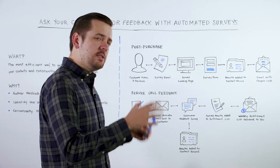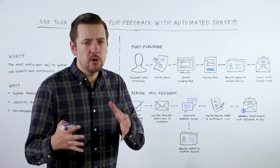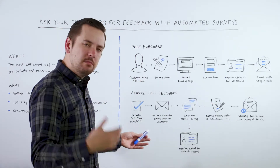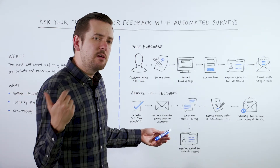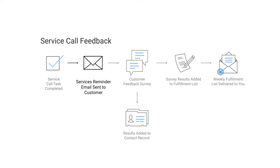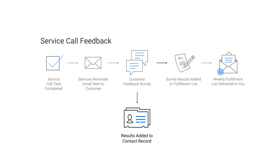The second way you can use this in your business is for service call feedback. Let's say you're in the service business — a consultant or a coach of some sort — and you do phone calls or in-person consultations. You're going to have tasks set up in Entreport, and we've got a great use case on tasks if you want to check that out. You do that task, you have that service call or consultation, you hang up the phone, you mark it complete, and then we send them an email: 'Thank you so much for taking me up on my coaching today. I really want to make sure that my coaching is as valuable to you and all my other customers as possible. Here's a link to a customer survey, I'd love it if you would fill it out.' They click that link, they fill out the customer survey, and that information is added to the contact record.